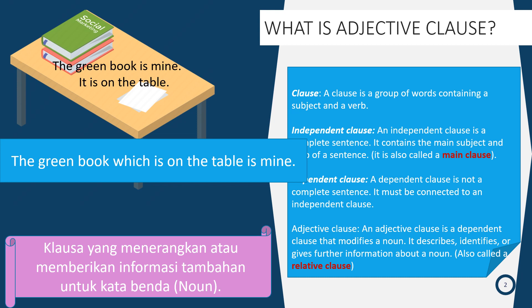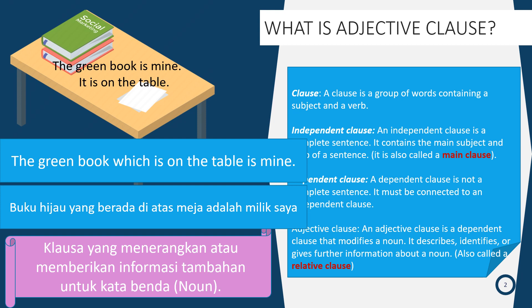Di sini adjective clause-nya adalah 'which is on the table.' Dia menerangkan independent clause-nya, yaitu 'the green book is mine.' Adjective clause 'which is on the table' — yang berada di atas meja. Kalau bahasa Indonesia-nya, adjective itu 'yang' ya. Buku yang mana, meja yang mana, orang yang mana — 'yang' itu berarti adjective clause, memberikan keterangan, deskripsi, atau informasi tambahan untuk kata benda atau noun.